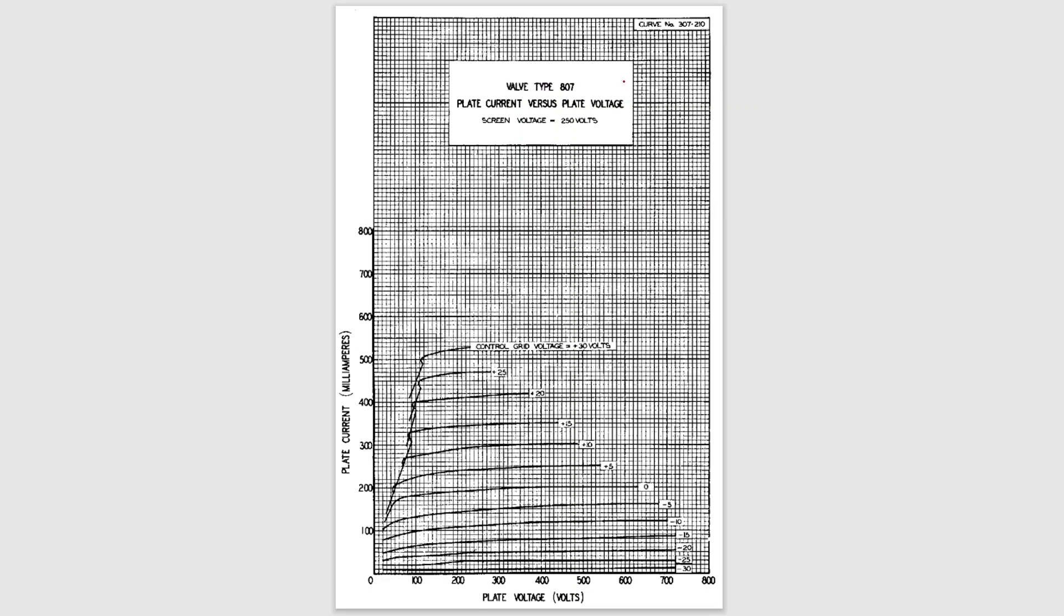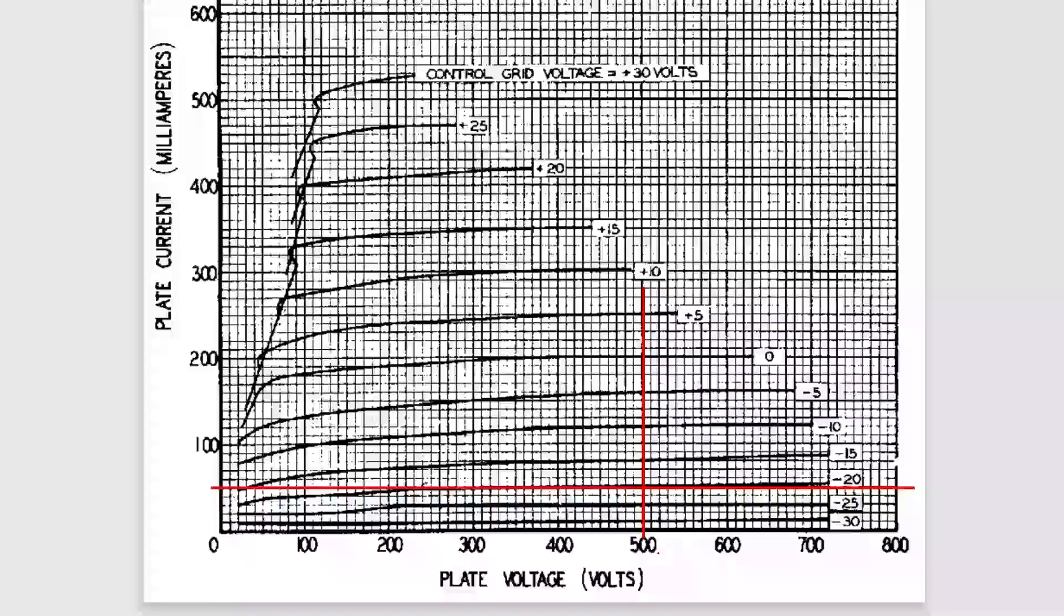And because I'm enjoying going down this rabbit hole, I was able to confirm that GE's test parameters do indeed make sense by cross-referencing them to their competitor's 807 datasheet, RCA in this case. Here on curve number 307-210, we see plate current versus plate voltage for several different values of control grid voltage. And this graph just so happens to be for a screen voltage of 250 volts. So looking at where a plate voltage of 500 volts and a plate current of 50 milliamps intersects, that occurs at a control grid voltage of minus 20 volts. Amazing! That's smack in the middle of the minus 15 to minus 25 volt range given in GE's test procedure. How about that? They made tubes that were interchangeable with each other.